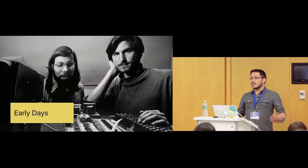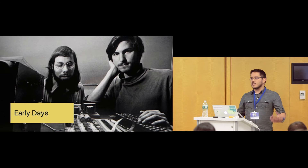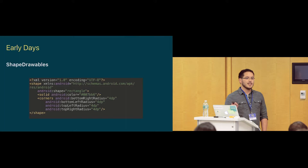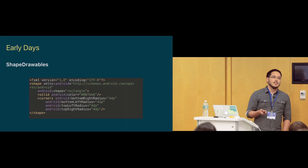At the beginning of everything in Android, we had shape drawables. We still have them — they're still nice, we like them a lot, and they're very easy to use. The nice thing is that they scale very well and you can do some nice stuff, but they are very limited. You can do rectangles, you can do triangles, and that's it.